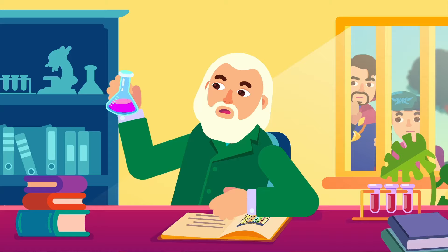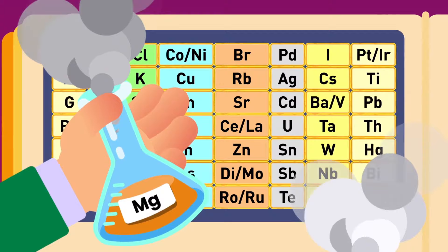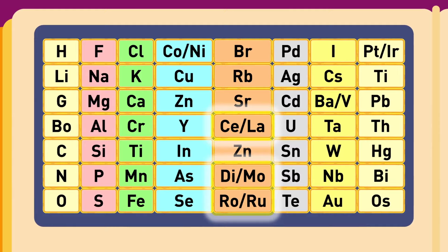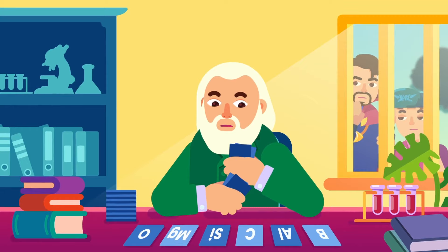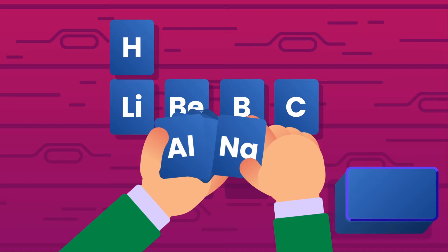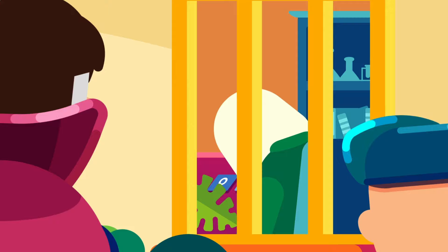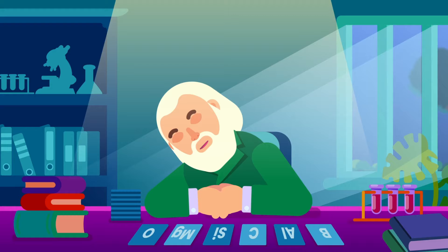Then came Dmitry Mendeleev, a Russian chemist, who looked at the periodic table that was being used at the time. He noticed a few problems: some elements were being put into groups with others they did not react similarly to, and some boxes of the periodic table even had multiple elements placed into them. Mendeleev started writing each known element on cards and kept rearranging them, like playing cards.